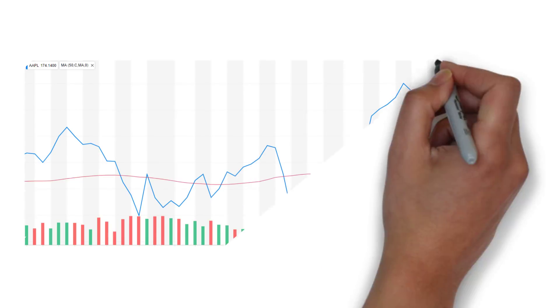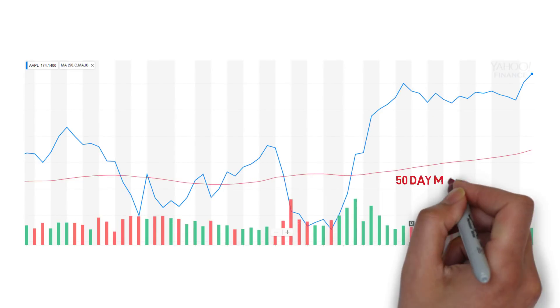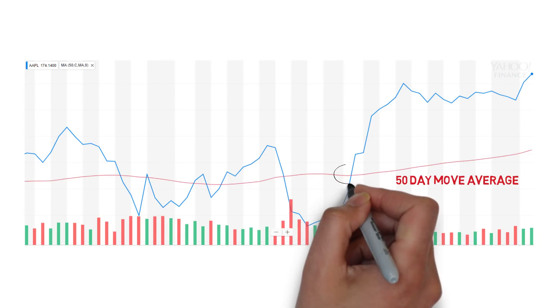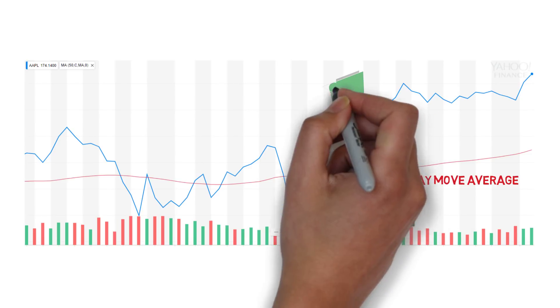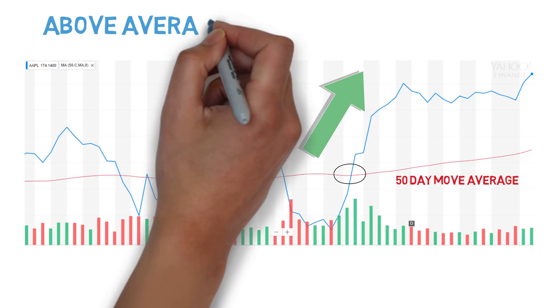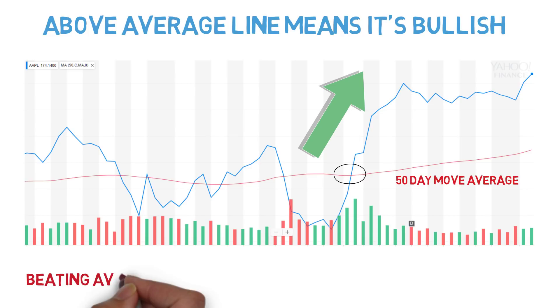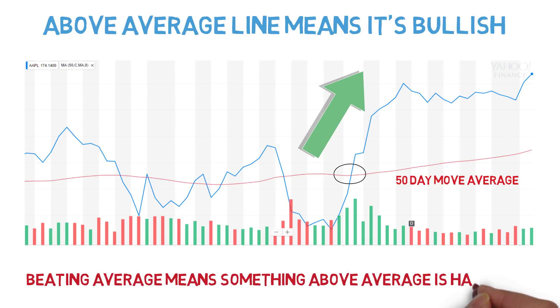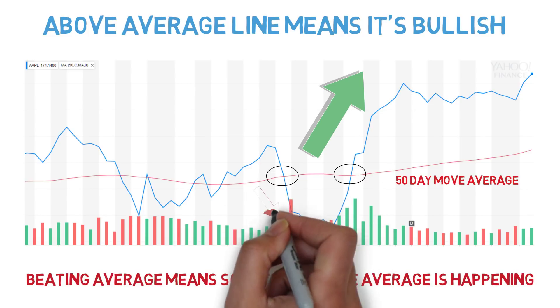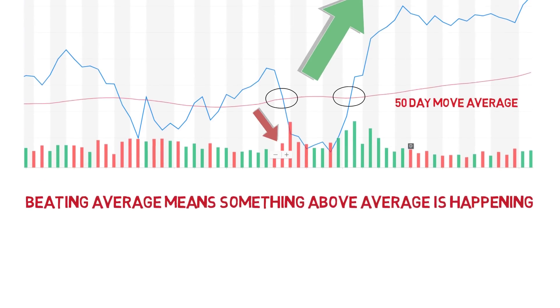The easiest way to use this indicator is to buy when a price goes above the average. For example, looking at Apple's chart, they're currently going above the 50-day average. This might mean the stock is bullish and will continue going up for a while. Because a price is above the average, it means something better than average is happening. If it goes below the average, it should mean it'll keep going down for a while.